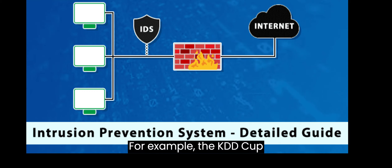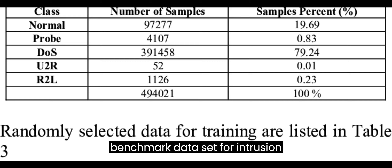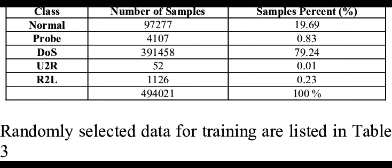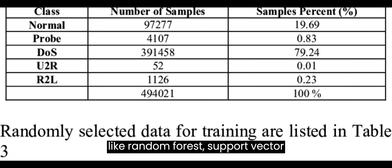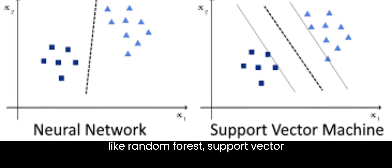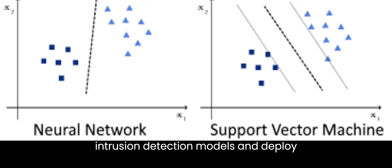For example, the KDD-CUP 1999 dataset is a widely used benchmark dataset for intrusion detection. Data scientists can pre-process and analyze this dataset, apply machine learning algorithms like random forest, support vector machines, or neural networks to build intrusion detection models.